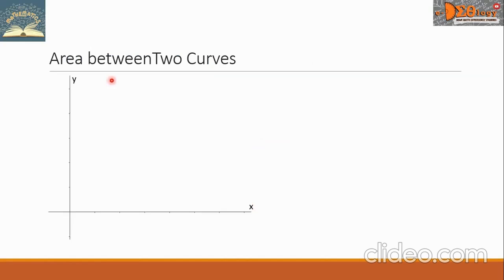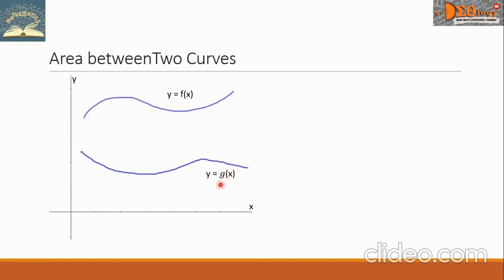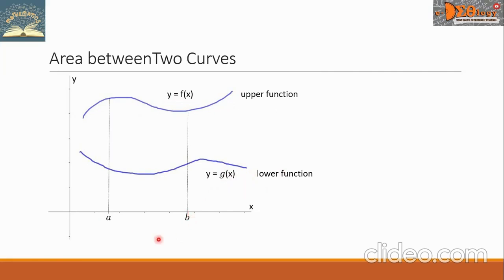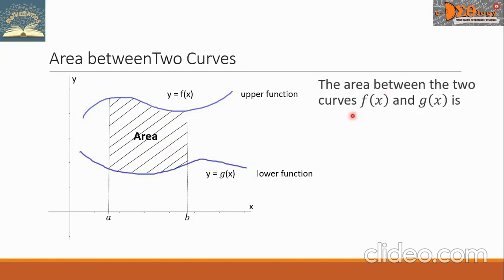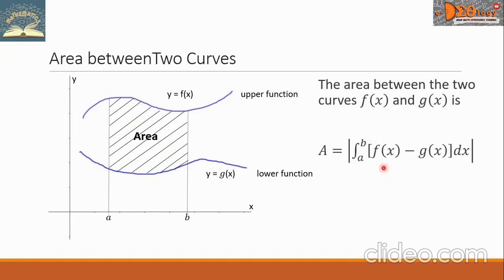Let us draw the x and y axis. Here we have a graph, and we name this as y equals f of x. Here is another graph below, and we name this as y equals g of x. Take note that f of x is the upper function, and this is the lower function. Let us draw two vertical lines that pass through a and b respectively. We can see that there is an area being described. The area between the two curves f of x and g of x is given by this formula: capital A, that is the area, equals the absolute value of the definite integral from a to b of the difference f of x minus g of x, then dx.